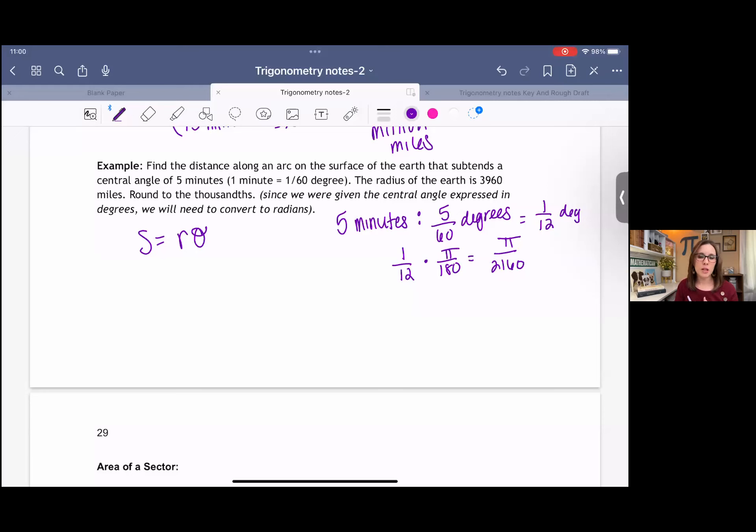Remember that our formula is s equals r theta where theta is in radians. Basically if one minute is one over 60 degree, then five minutes would be five over 60 degrees. And then you can reduce that to one 12th degree. To convert to radians, we multiply it by pi over 180. And you can multiply that out to get pi over 2,160. Or we can just leave this like that. In either case, it's fine.